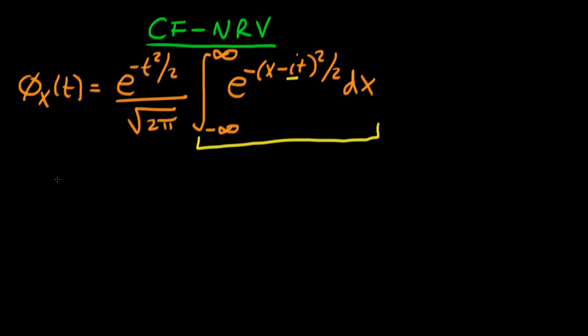The change of variable we're going to make is we're going to define a variable s, which is a complex variable which is equal to x, which is just a real variable, minus it. If we just change variable, we know that ds is just going to be equal to dx.